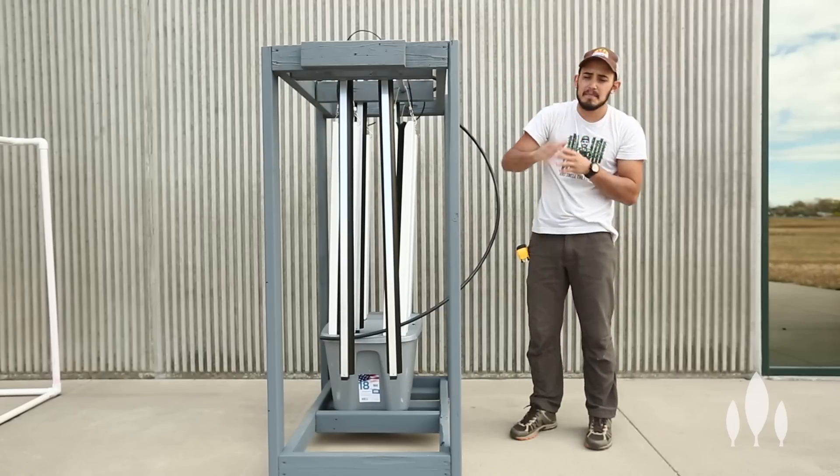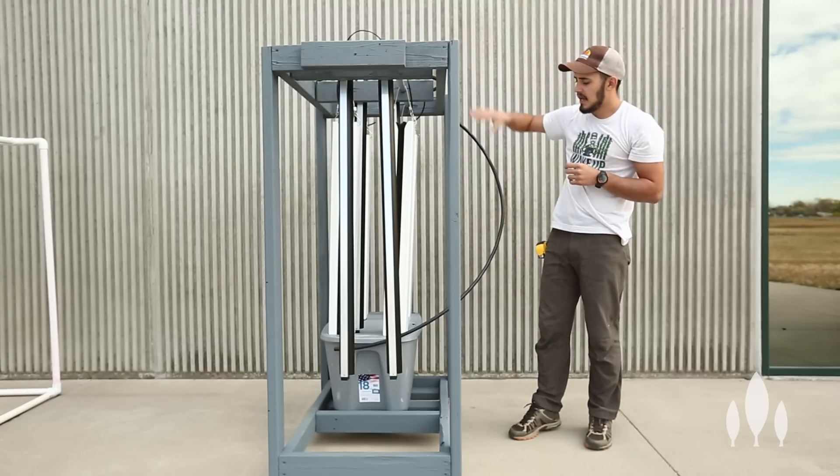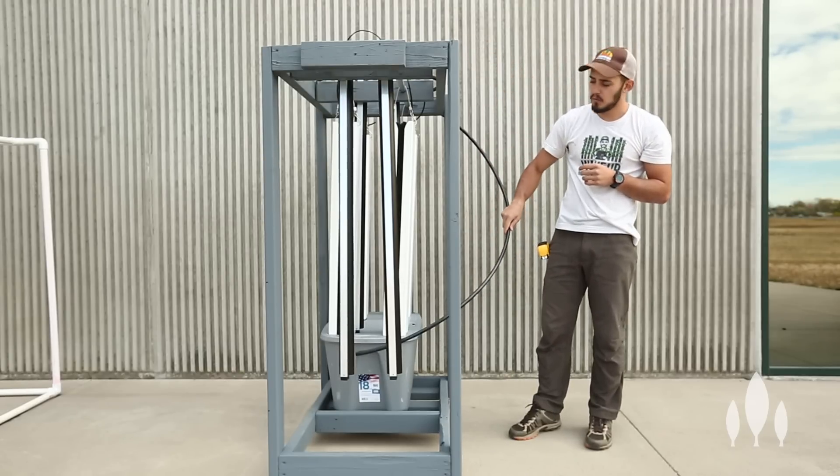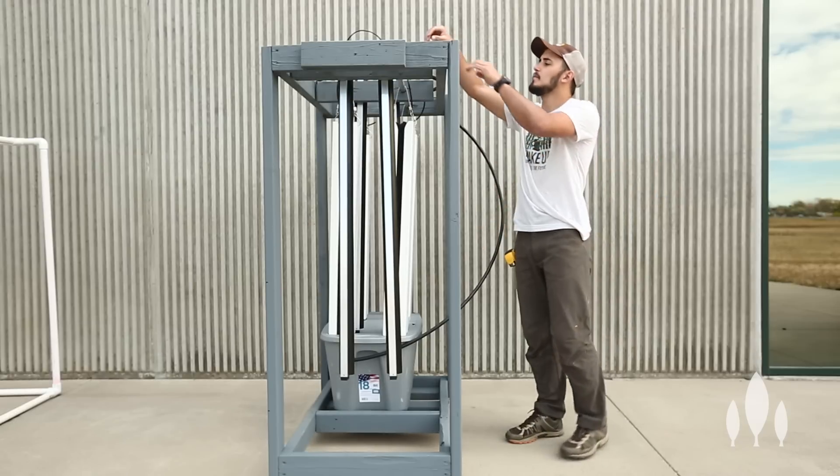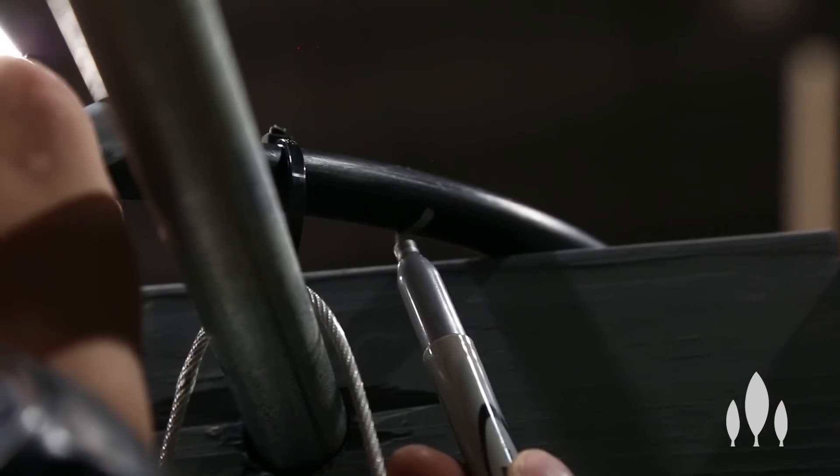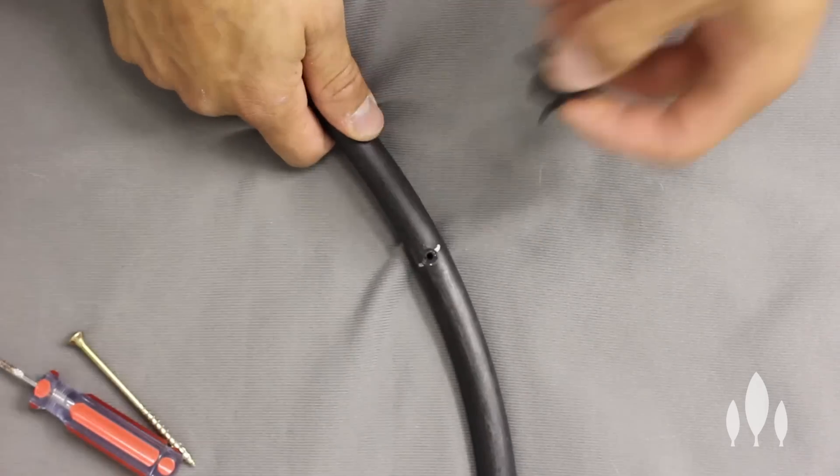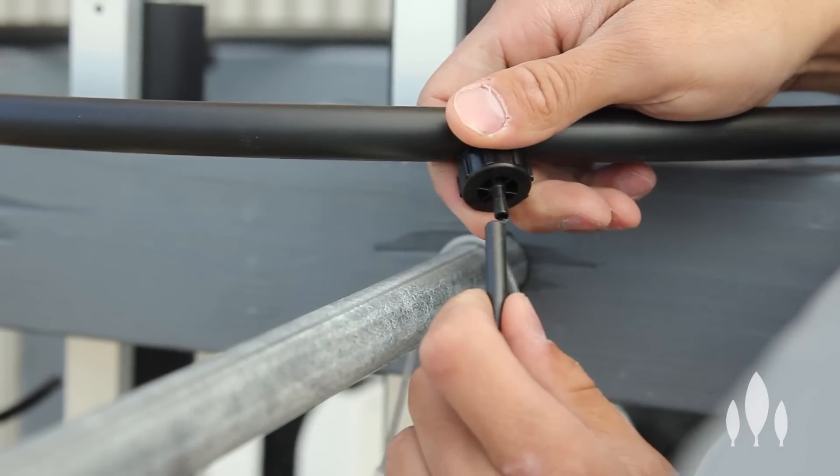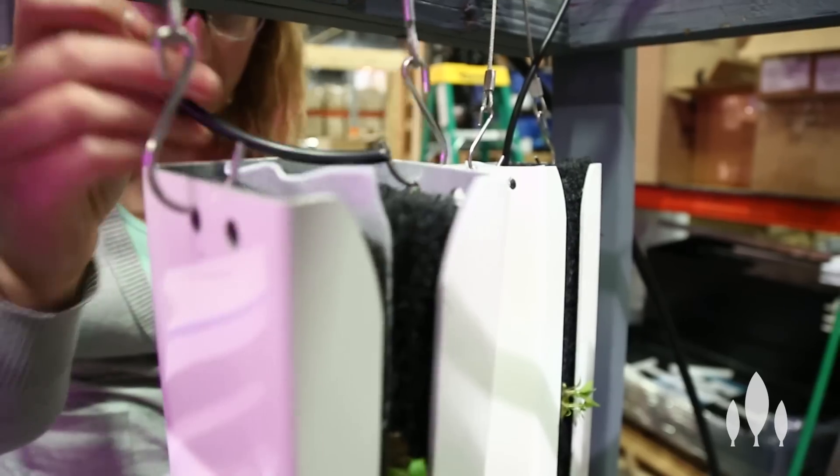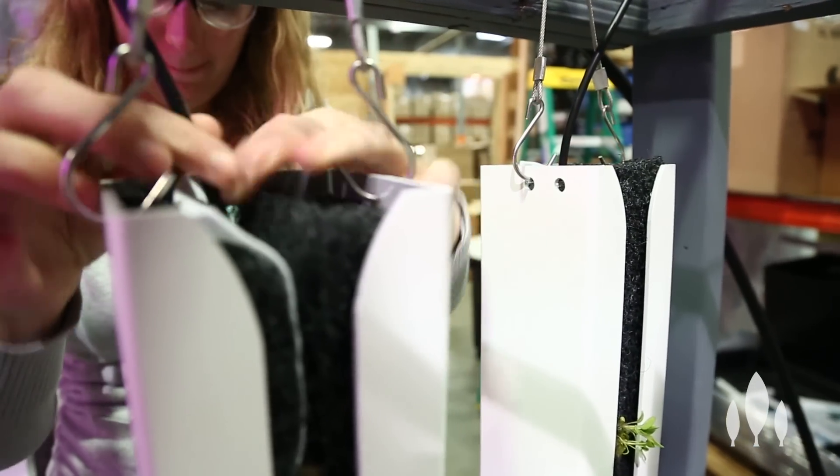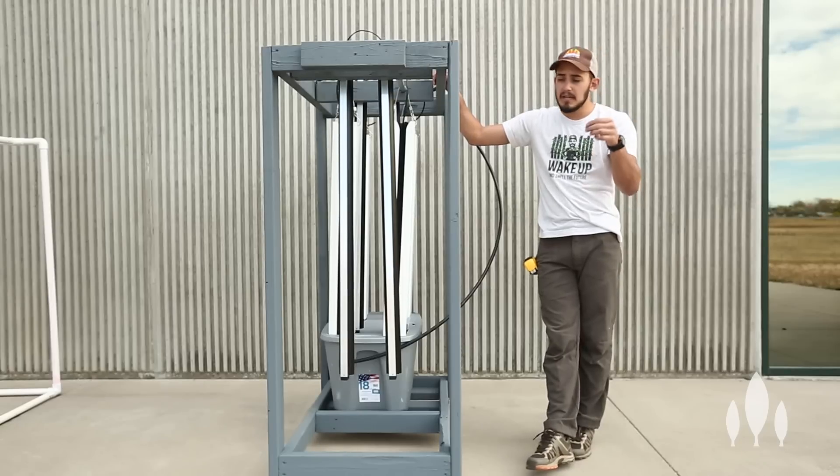So once we have this main line fixed to the top and we know there's enough length that it'll go to our pump, what we've done is we've marked out a spot where we can punch a button dripper into that black poly tubing. Then from that button dripper we've connected quarter inch poly tubing and ran that directly into our towers.